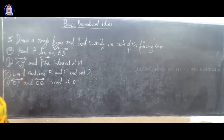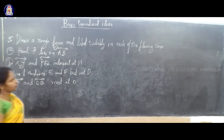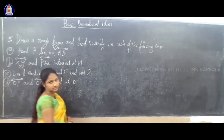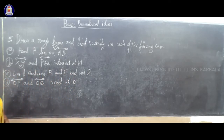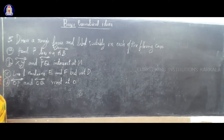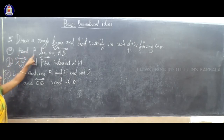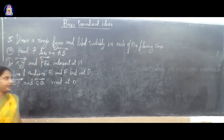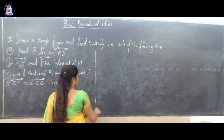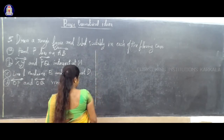The next question, fifth one: draw a rough figure and label it to describe each of the following cases. First question: point P lies on line AB.